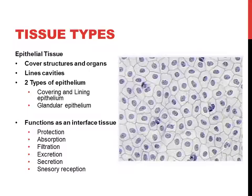All the glands in our body are made up of epithelial tissue, and these glands can be one cell or multiple cells. Epithelial tissue functions as an interface tissue — a barrier between the body and the outside. As an interface tissue, it can serve to protect the body (like our skin), absorb things (like the lining of our digestive system or alveoli in our lungs), and filter things (like in our kidneys).